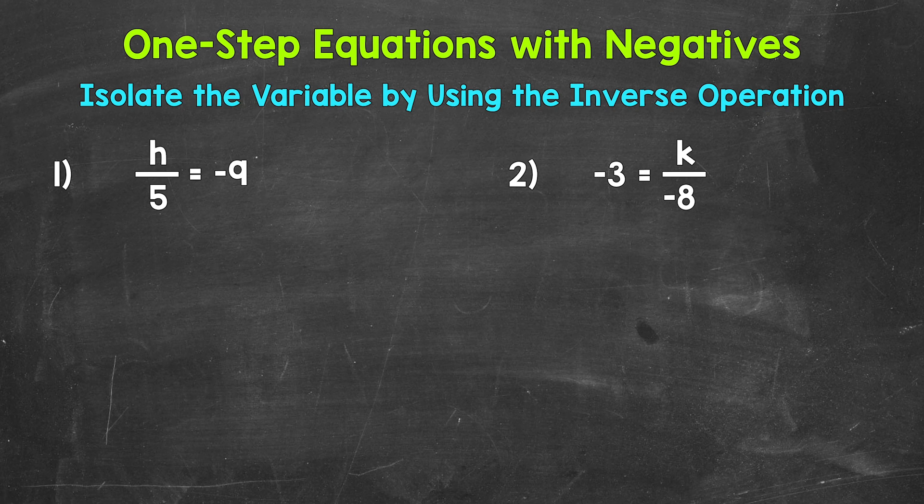Let's jump into number one, where we have h divided by 5 equals negative 9. We need to isolate that variable of h — we need to figure out what h equals. Since h is being divided by 5, we need to undo that division by using the inverse operation, and the opposite of division is multiplication.